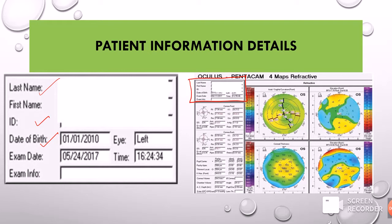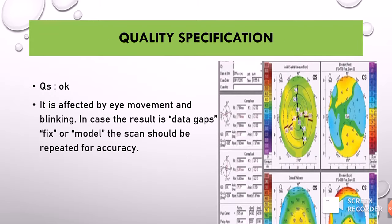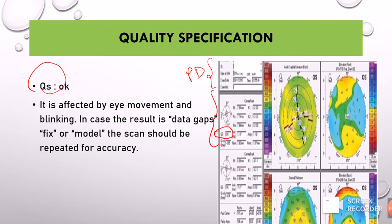Date of birth is very important because the Pentacam will be comparing it with age-related controls and other normative data. Next, we have the quality specification. The quality specification tells us about the quality of the scan and is written as QS. If QS is okay you can proceed with the scan, but sometimes there are results like data gaps written as 'fix' or 'model,' which means the scan is not of good quality and you need to repeat the scan.